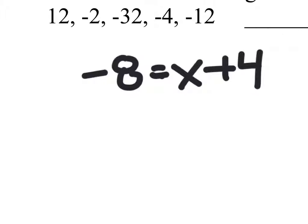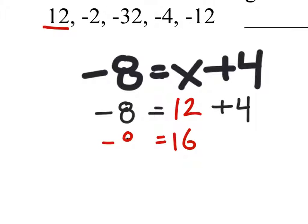So I've rewritten the equation here, and what I can do now is just replace the x with these values and see which of these is correct. The first one I'm going to start with is 12. So I replace x with 12, as you can see here, and I add 12 and 4 which gives me 16. So the question is, does negative 8 equal 16? This one is false, which also means that 12 is not a solution to this problem.